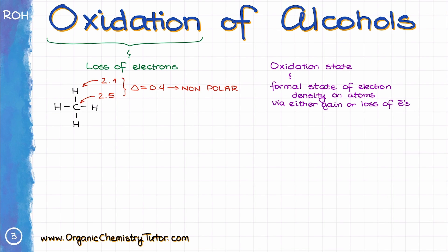If there is any difference in electronegativity, we'll formally assign higher or lower oxidation states to atoms. The only time a bond doesn't influence the oxidation state is when an atom is connected to another atom of itself — the same element. In this case, carbon has slightly higher electronegativity than hydrogen. Although the difference is quite small, it's there, and that's all that matters for oxidation states. So we say each bond is polarized — formally — towards the carbon atom. This means carbon has an oxidation state of negative 4, and each hydrogen has an oxidation state of plus 1.